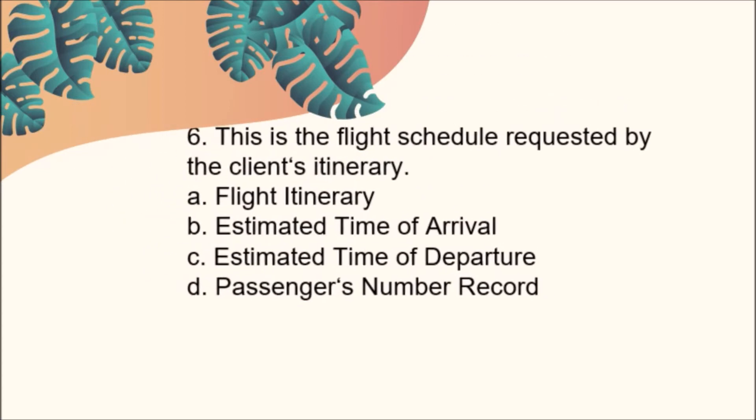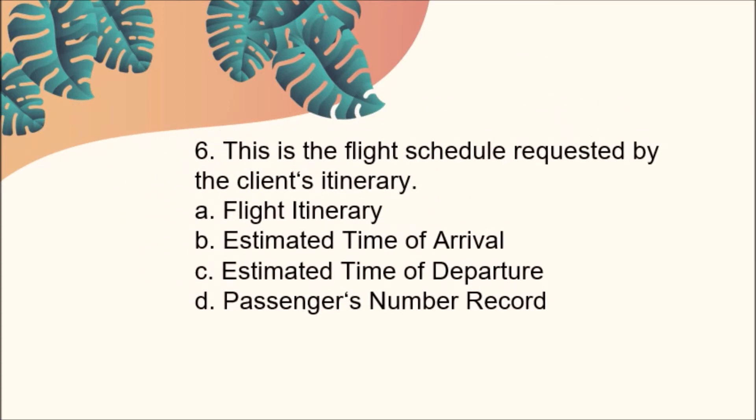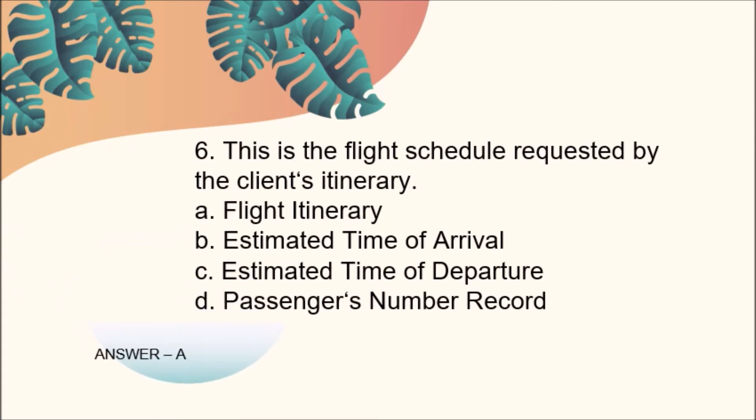Number six: This is the flight schedule requested by the client's itinerary. A, Flight Itinerary; B, Estimated Time of Arrival; C, Estimated Time of Departure; D, Passenger Number Record. The answer is Letter A, Flight Itinerary.